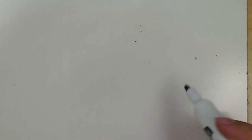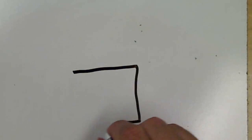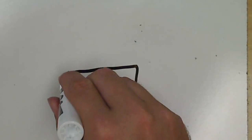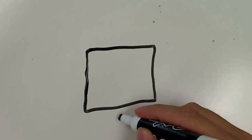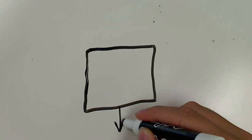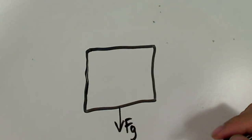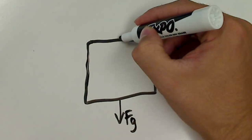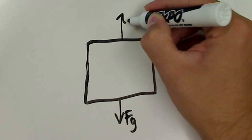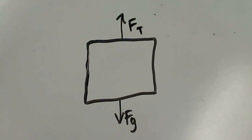Now let's say we have a sign hanging from a pole by a rope. Here's our sign — it's hanging. That is the force of gravity pulling it down. But it's hanging from a rope, so what's pulling it back up and keeping it from falling? The force of tension.